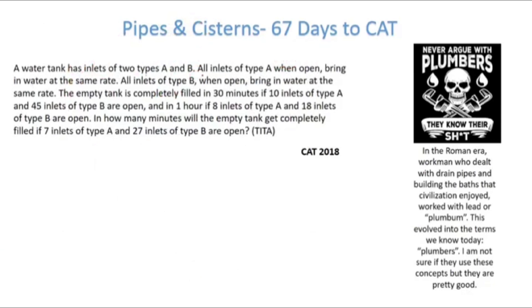A water tank has inlet of 2 pipes A and B. All inlets of type A when open bring in water at the same rate. All inlets of type B when open bring in water at the same rate. The empty tank is completely filled in 30 minutes if 10 inlets of type A and 45 inlets of type B are open. Let's say the rate for type A pipes is x and rate for type B pipes is y. So if there are 10 inlets of type A, 10x times 30 minutes, and 45 inlets of type B, 45y times 30 minutes. This should be equal to unit work which is filling the tank.